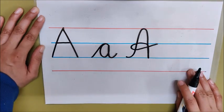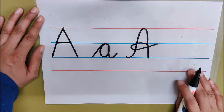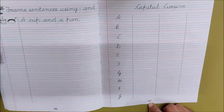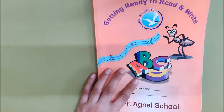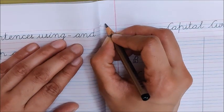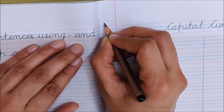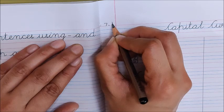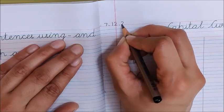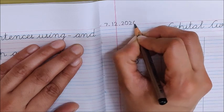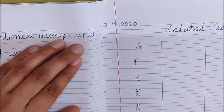So, take your orange book. Open page number 57. Which number is it? 57. I have opened page number 57 of my orange book. Getting ready to read and write. Write the date here. Today is December 7 — 7.12.2020. So let us start.